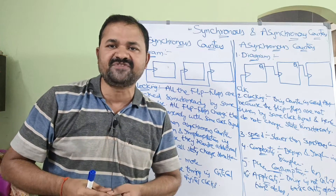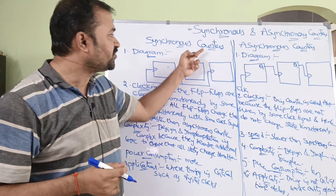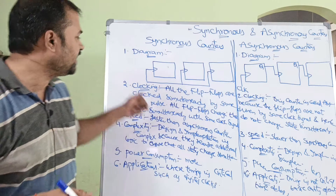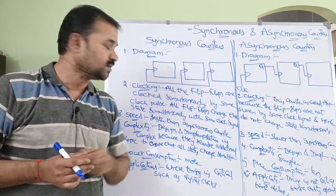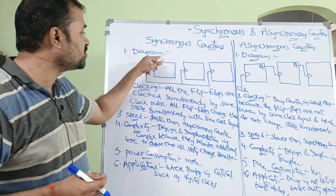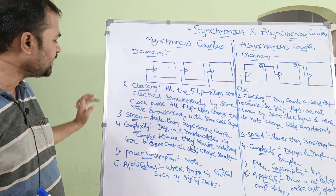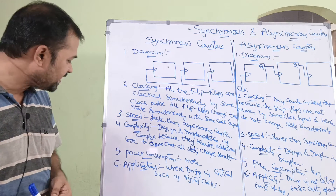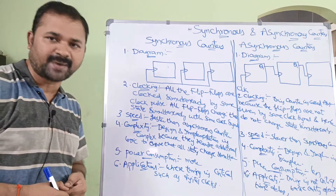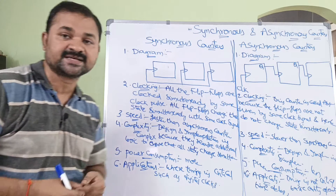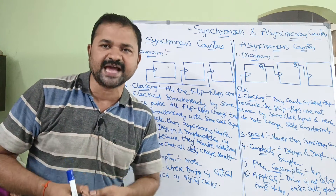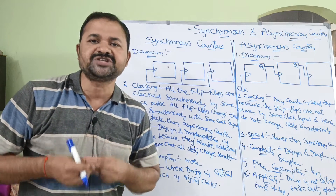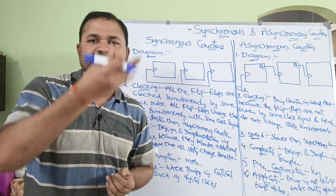Now let us see the differences between synchronous counters and asynchronous counters. In total we have six differences. The first one is based on the diagram, the second one is clocking, the third one is speed, the fourth one is complexity, the fifth one is power, and the sixth one is applications. First, let's see the diagram. A counter is a collection of flip-flops, just like a register.